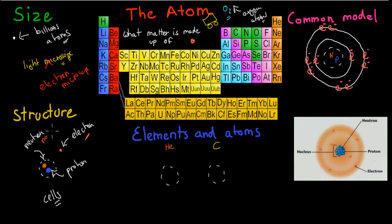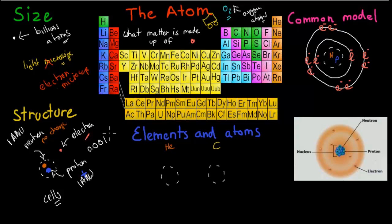The neutron has no charge, and the proton is positively charged. I also want you to know about their weight. A neutron and a proton both weigh one atomic mass unit, whereas the electron weighs roughly 0.001 atomic mass unit. It's actually about 1,800 times smaller than both a proton and a neutron. So overall the electron is very small.